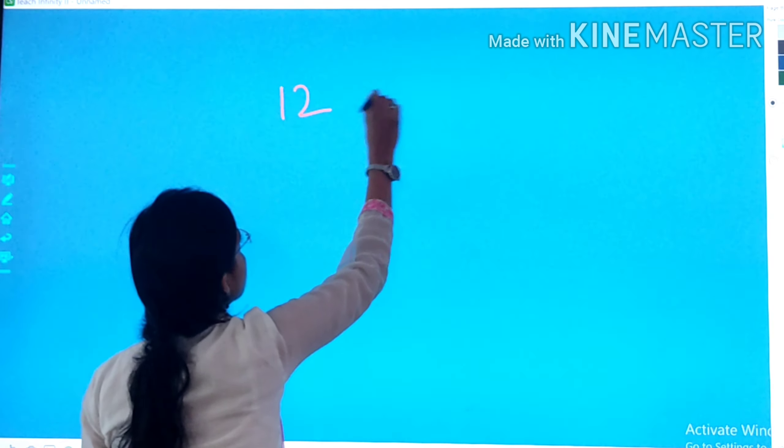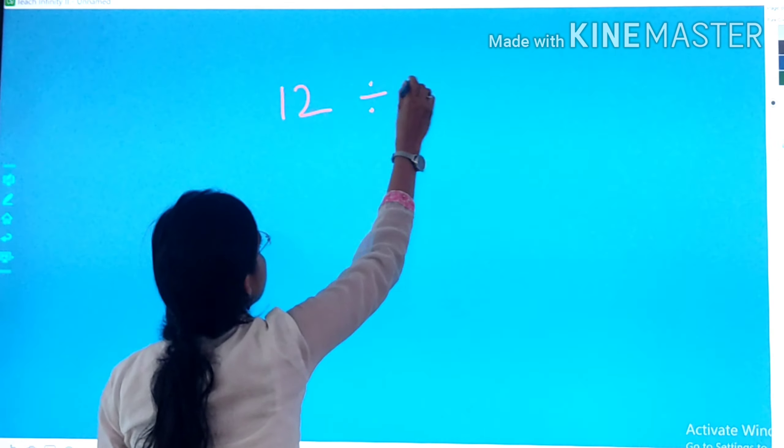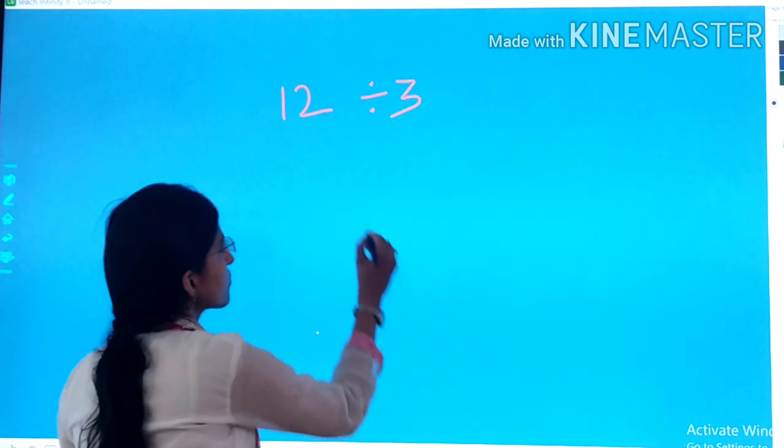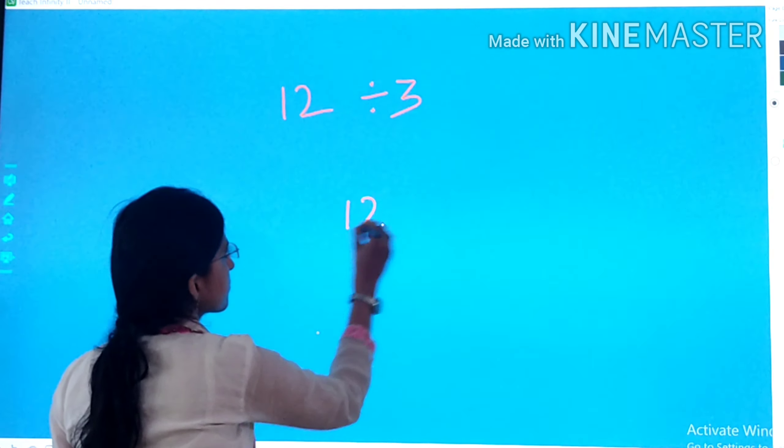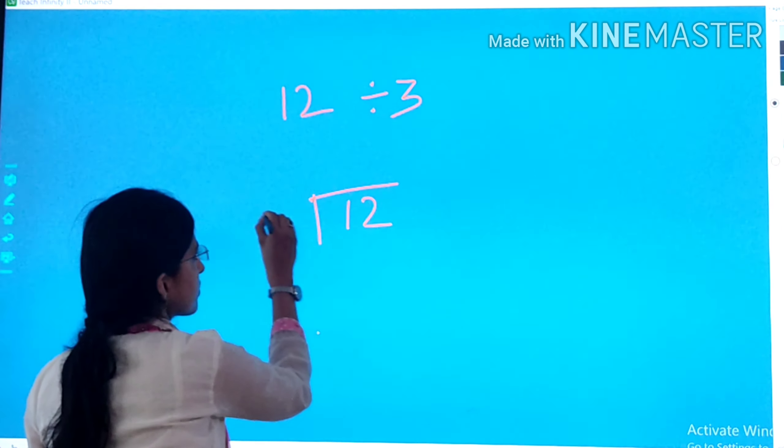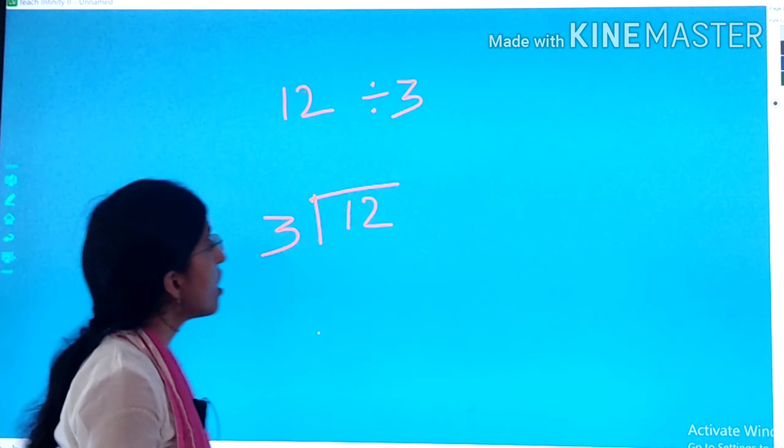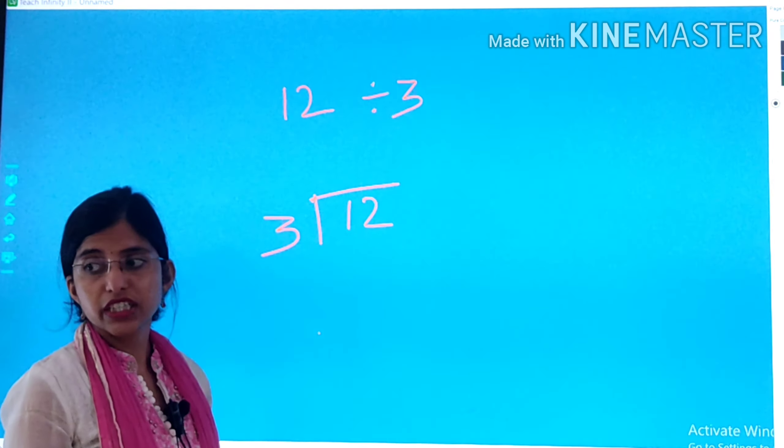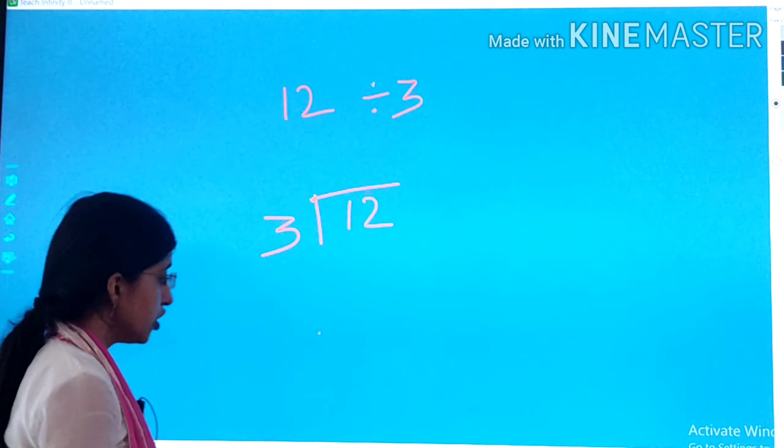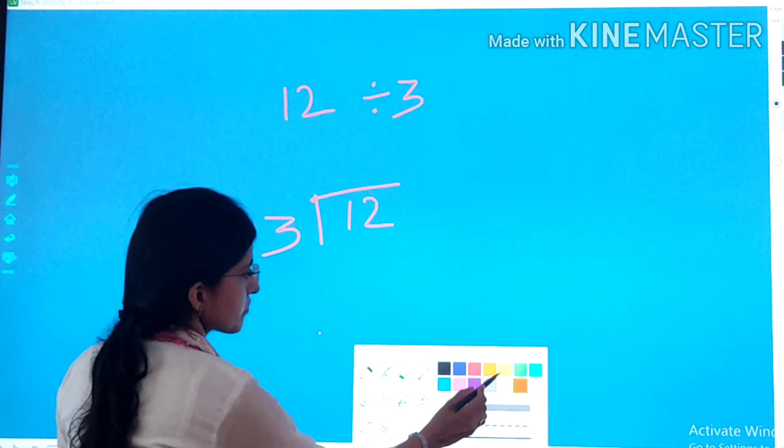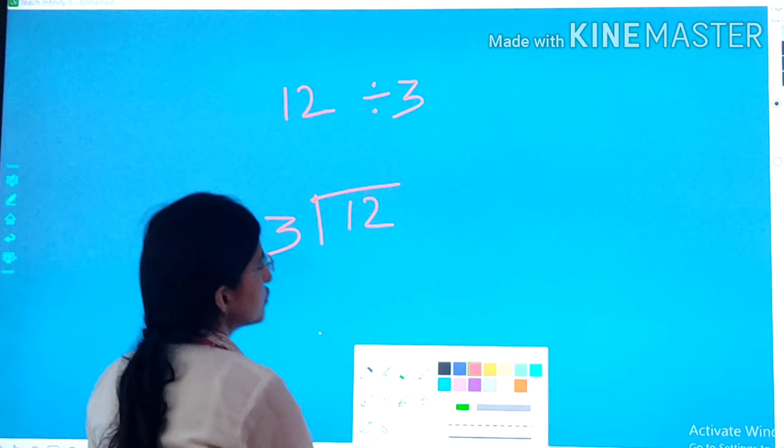Now we will solve a sum, 12 divided by 3. So how do we do this? 12 and 3. We learned this in second standard. Now we are revising it. So what we will do now? Now we will write the table of 3 here.